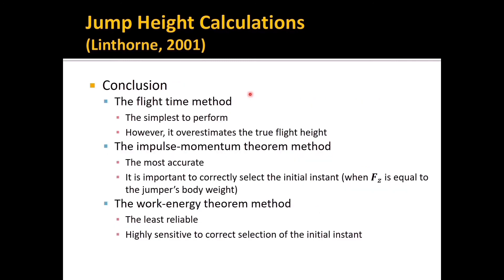Conclusion of Study 3: the flight time method is the simplest to perform, however it overestimates the true jump height. The impulse-momentum theorem method is the most accurate, and it is very important to correctly select the initial instant in this method. The work-energy theorem method is the least reliable and is highly sensitive to the correct selection of the initial instant.